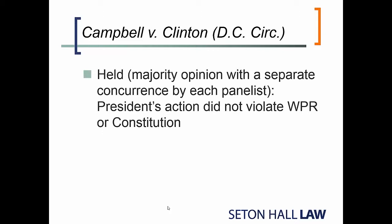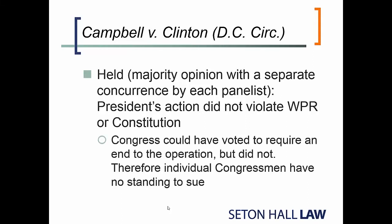This is the case that goes up to the D.C. Circuit. Note that the case is filed before the hostilities cease, but as it is pending, the hostilities have ceased. You end up with a three-judge appellate panel with a majority opinion and three separate concurrences. The majority opinion is that the president's action did not violate the War Powers Resolution or the Constitution, primarily because Congress always remained free to adopt a resolution that would have required the president to end the operation — but Congress never did. Effectively, the majority saw the case as individual congressmen who couldn't win politically in the legislative chamber trying to get the courts to make the legislature do what they wanted.